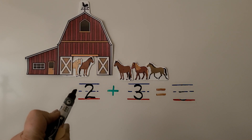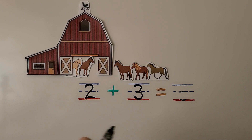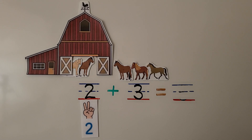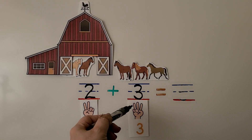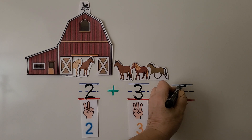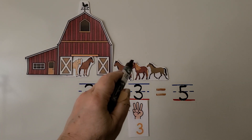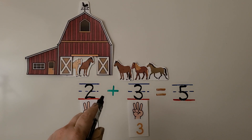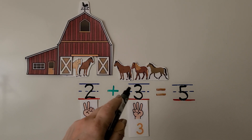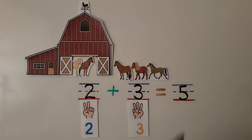Two tells the number of horses in the barn, and three tells the number of horses that come. We can count on from two: two, three, four, five. There are five horses now, and we write the number five. We make sure to count both groups — the ones that are there and the ones that come. The plus symbol tells us to add, and the equal symbol tells us that two plus three is the same as five.